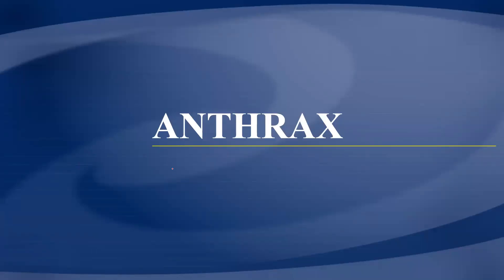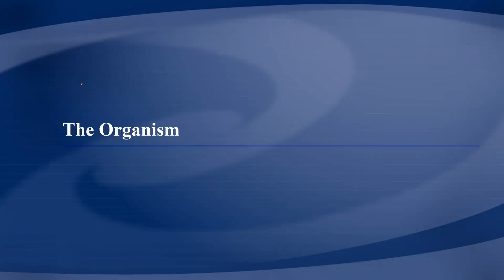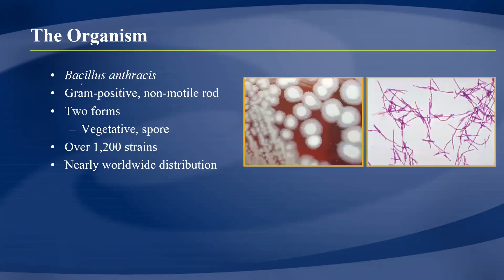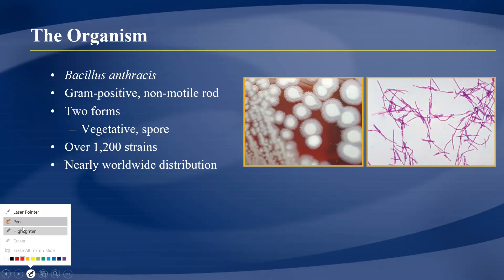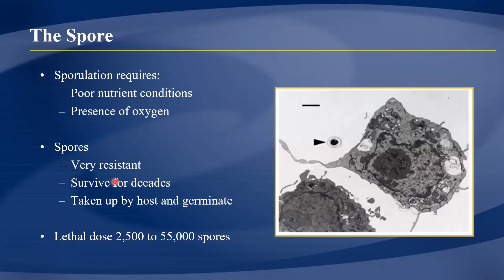Let's look at anthrax, which is another zoonotic disease. We'll characterize the organism, look at the epidemiology, transmission, the disease in animals and humans, and then prevention and control. The causative organism is Bacillus anthracis, a gram-positive, non-motile bacterium. It occurs in two forms: a spore form and a vegetative form, and there are over 1,200 strains distributed all over the world.